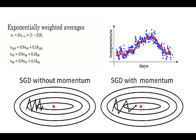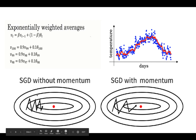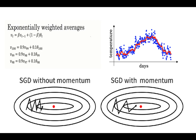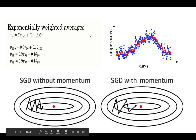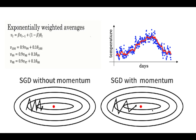This same concept is used in optimization algorithms for updating the weight parameters in ML and DL algorithms. For example, looking at the diagram for SGD without momentum, there are more oscillations, which can increase training time and prevent convergence to the global minima. With SGD with momentum, the oscillations are less and convergence is faster.